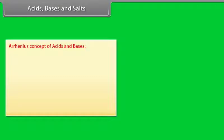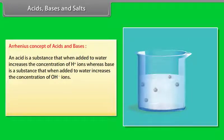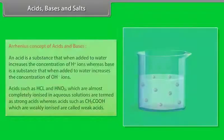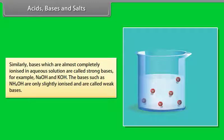According to the Arrhenius concept, an acid is a substance that when added to water increases the concentration of H⁺ ions, whereas a base is a substance that when added to water increases the concentration of OH⁻ ions. Acids such as HCl and HNO₃, which are most completely ionized in aqueous solutions, are termed strong acids, whereas acids such as CH₃COOH, which are weakly ionized, are called weak acids. Bases which are almost completely ionized, such as NaOH and KOH, are called strong bases; bases such as NH₄OH, which are only slightly ionized, are called weak bases.